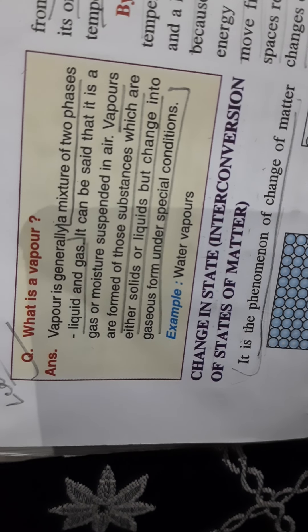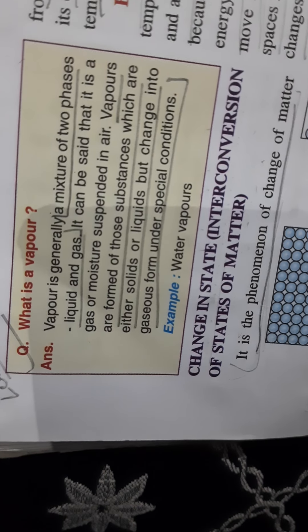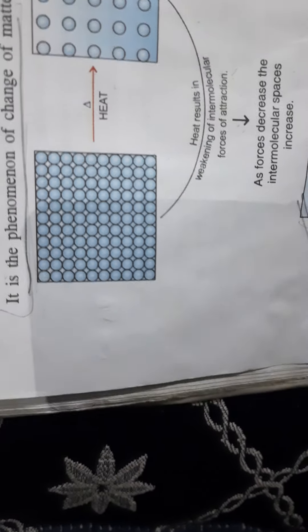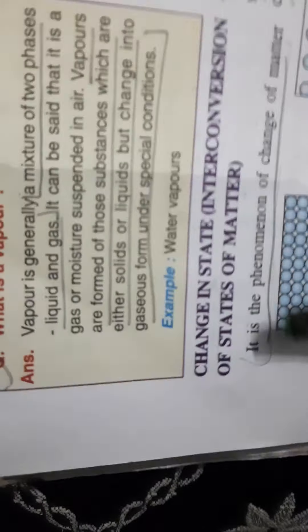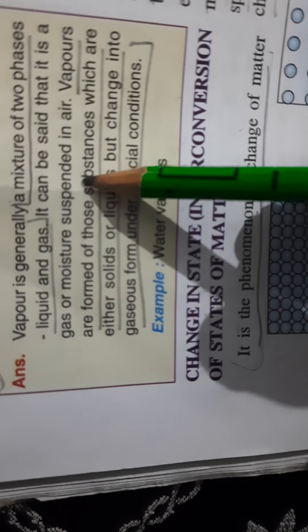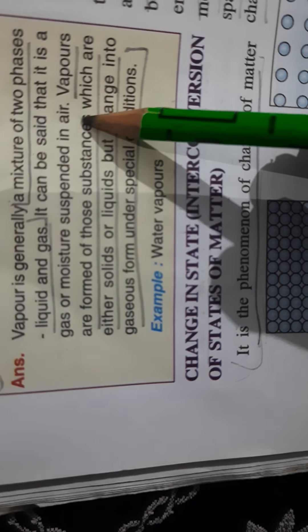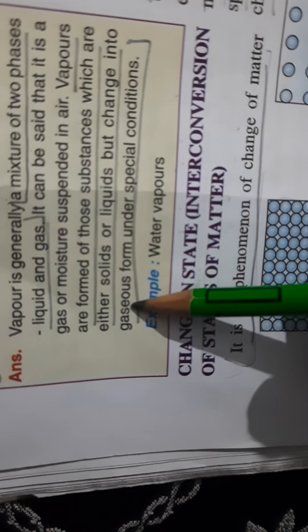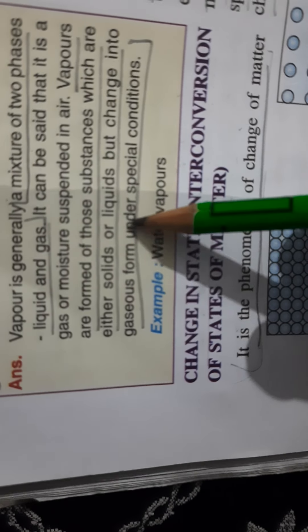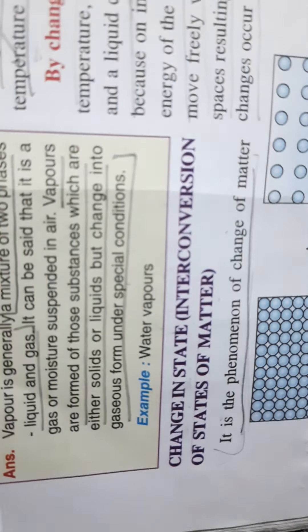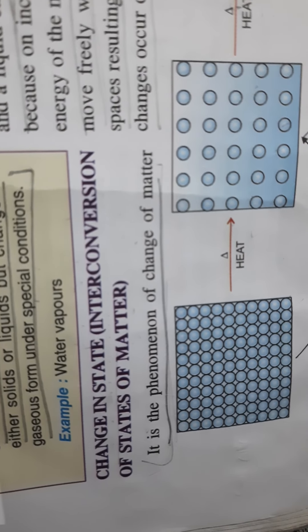Now we will come to know what is vapour. Vapour is the gaseous state of matter, and it is generally said that a mixture of two phases — liquid and gas — is called vapour. Gas or moisture suspended in the air is referred to as water vapour. Vapours are formed from those substances which may be solids or liquids; when heated, they change into the gaseous state under normal conditions.